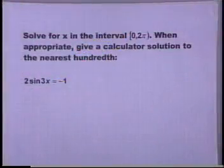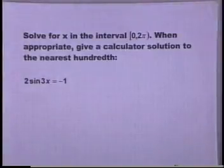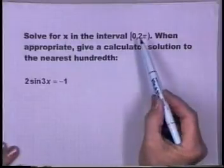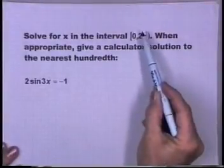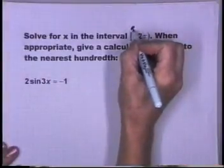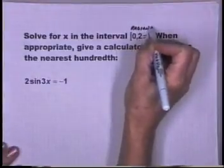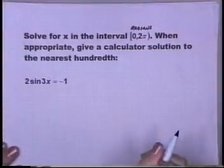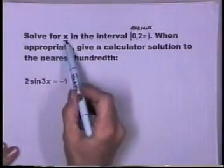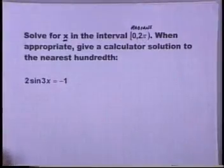Let's take a look at our first example. Solve for x in the interval 0 to 2π. When appropriate, give a calculator solution to the nearest hundredth. The first thing I notice is that we want x in the interval from 0 to 2π. This interval setup suggests that we want radian solutions, since the interval is given in terms of radians rather than degrees. So when we solve for x by itself, the x values need to be between 0 and 2π.